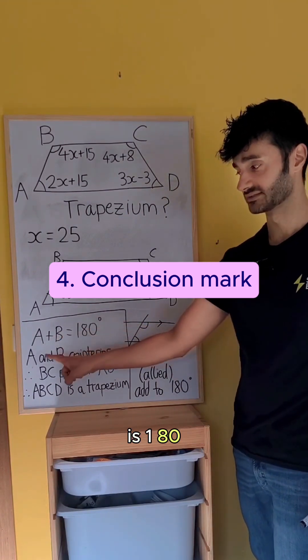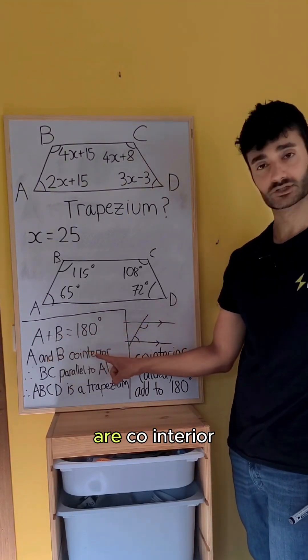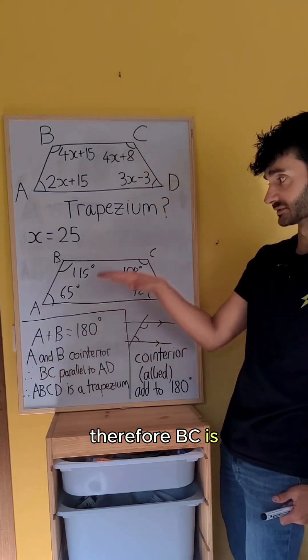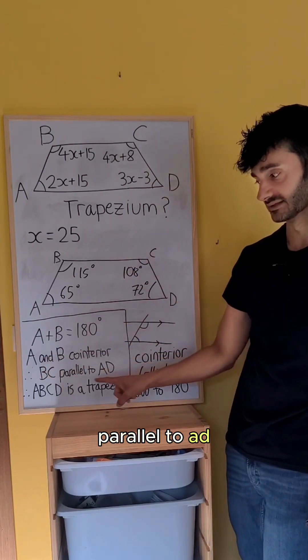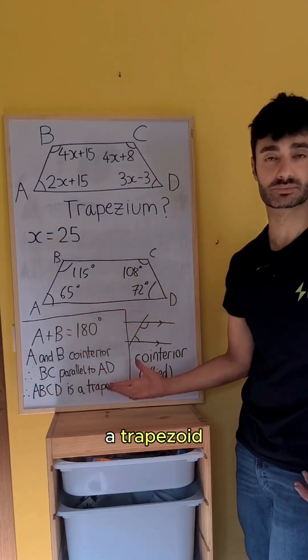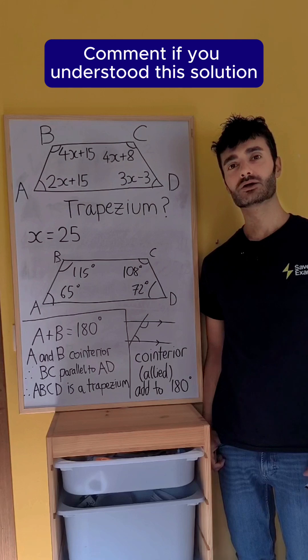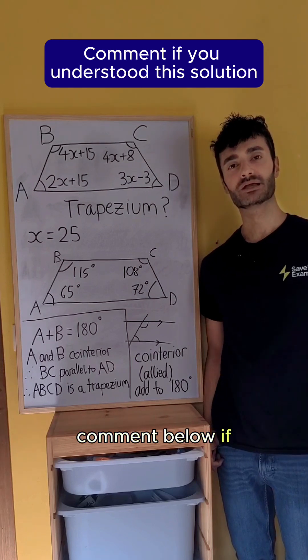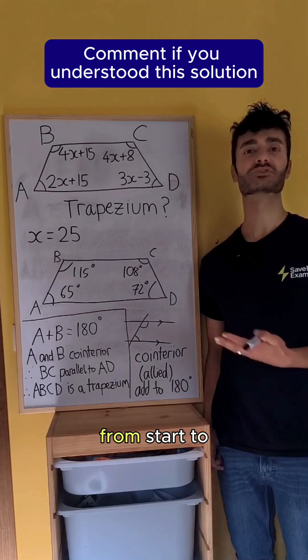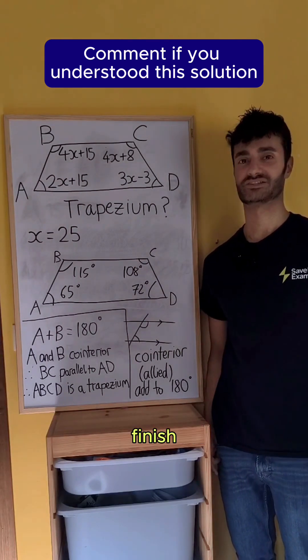A plus B is 180. A and B are co-interior, therefore BC is parallel to AD, so ABCD is a trapezium. Comment below if you understood the whole solution from start to finish.